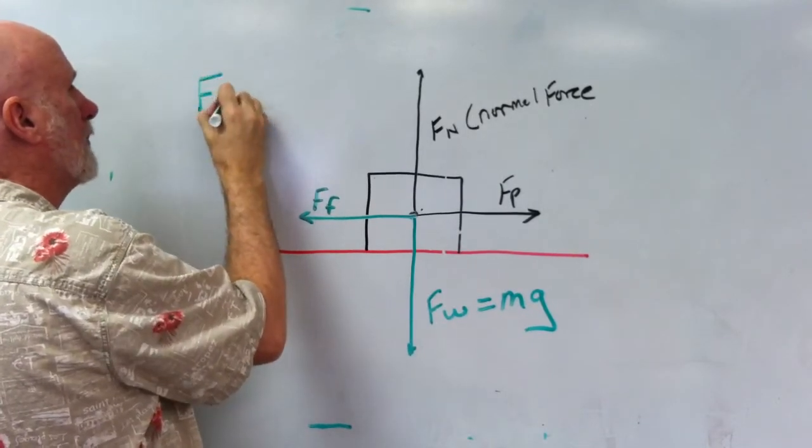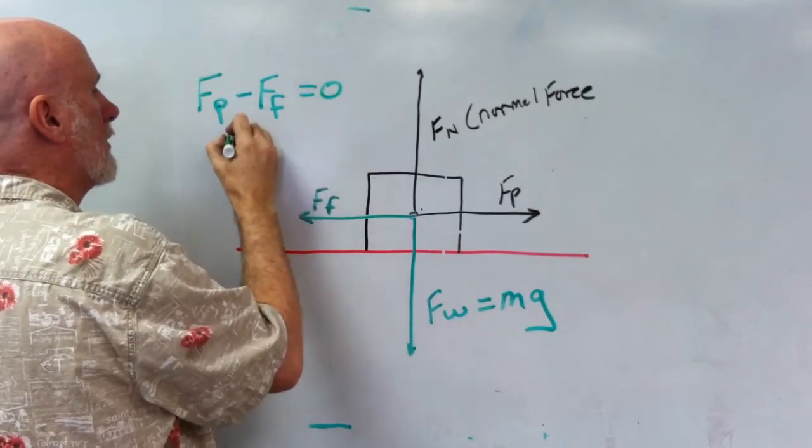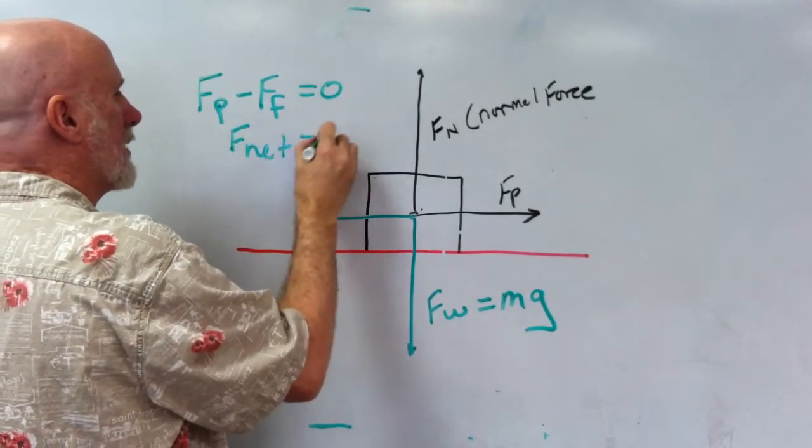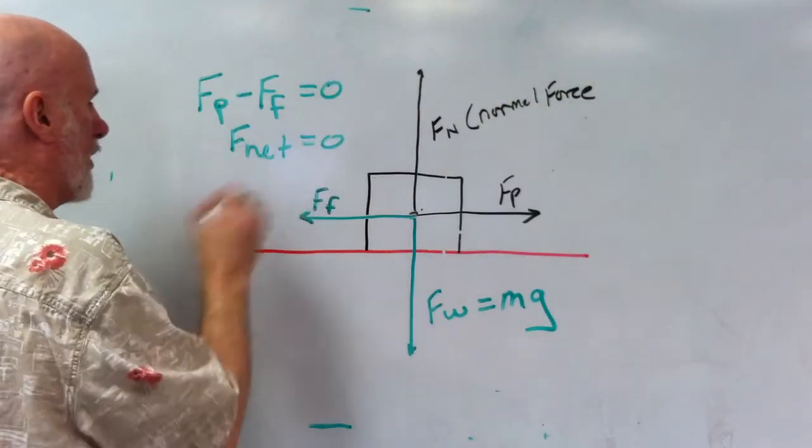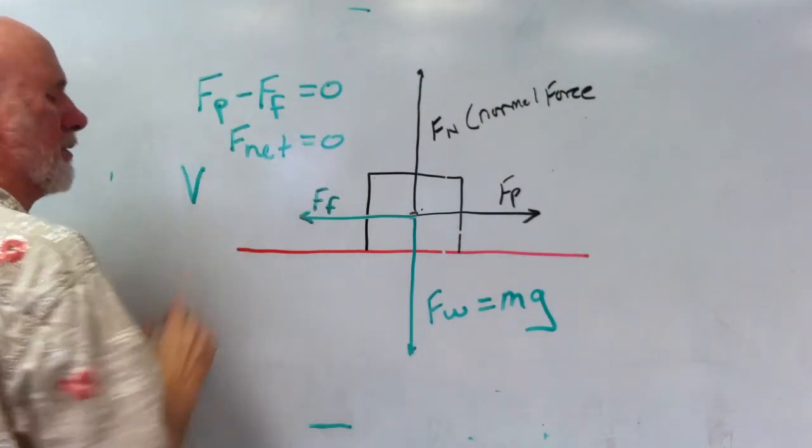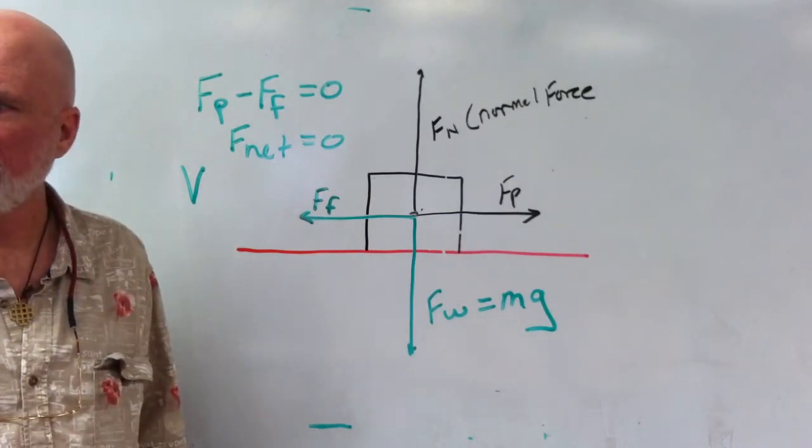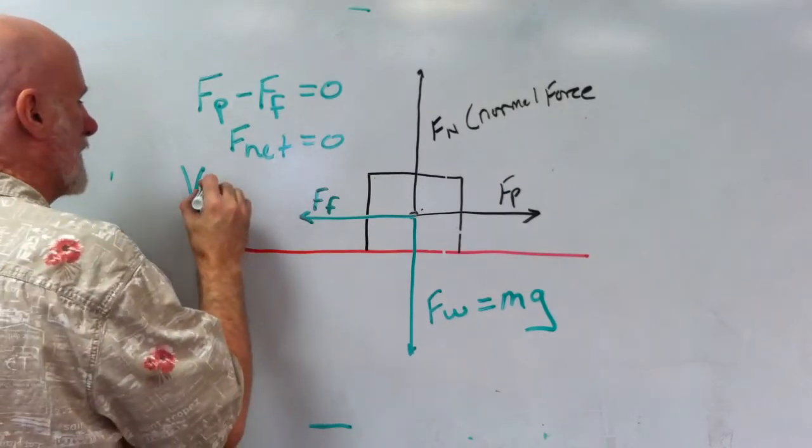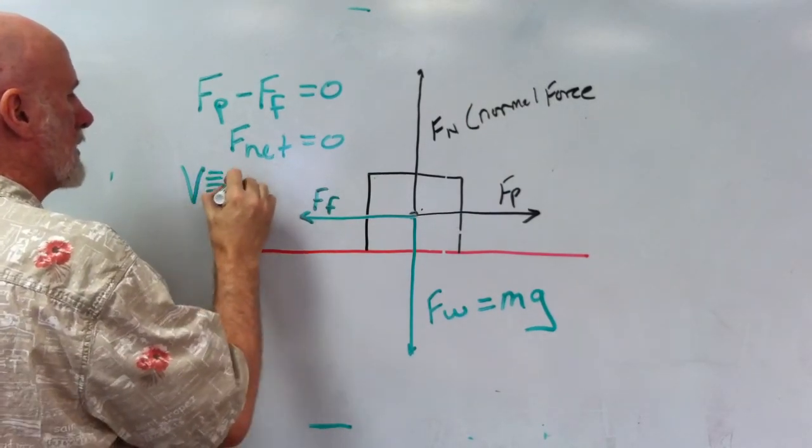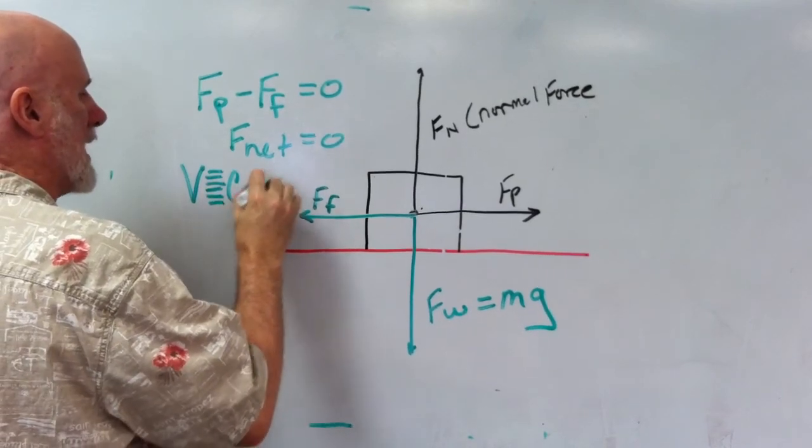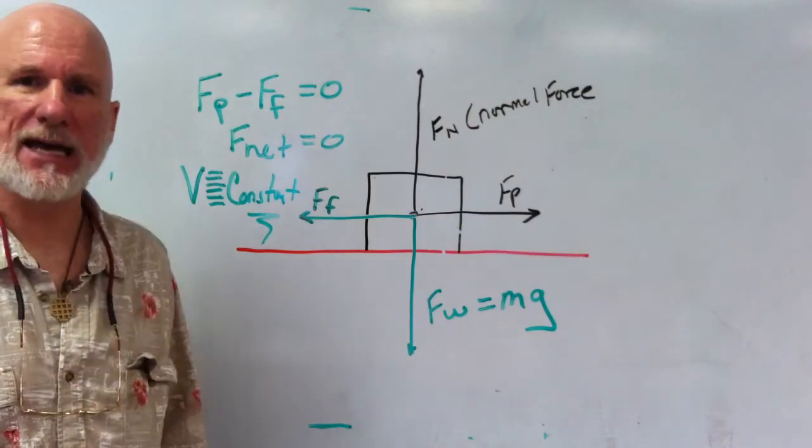So, Fp minus Ff equals zero. So, F net equals zero. Clear? Therefore, V, V stands for what? Victory? Velocity. Excellent. Equal is constant. Velocity is constant. Excellent. Thank you very much.